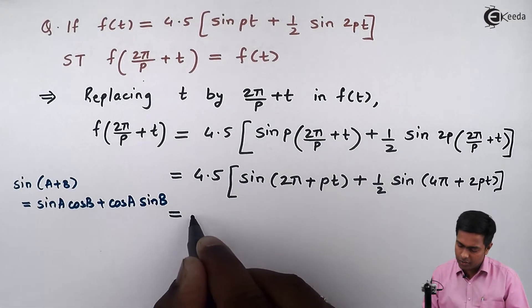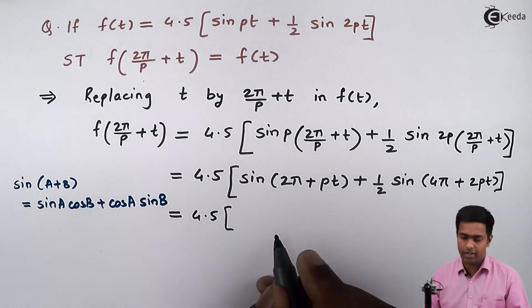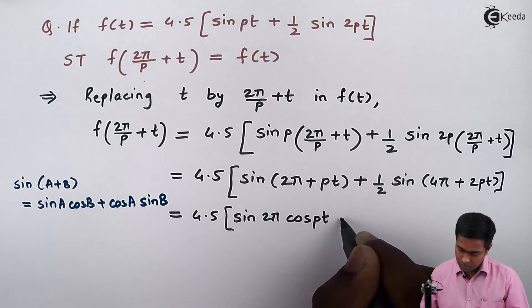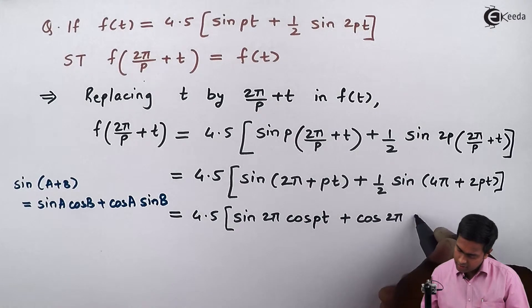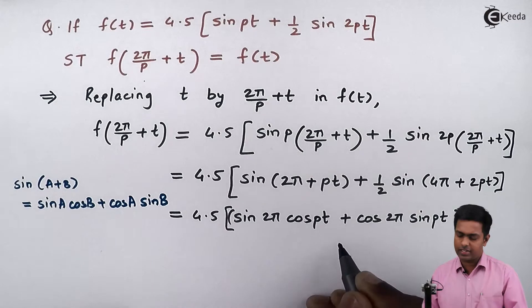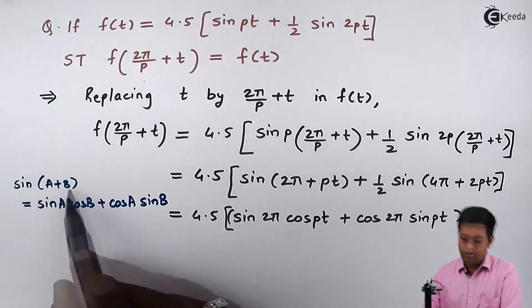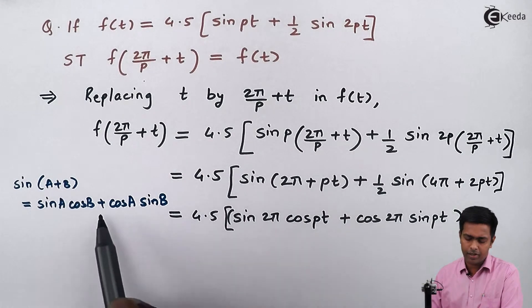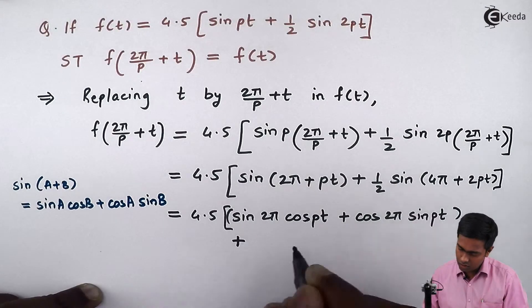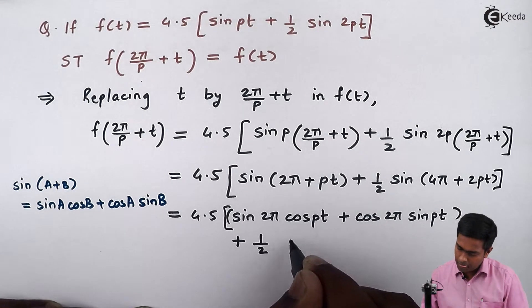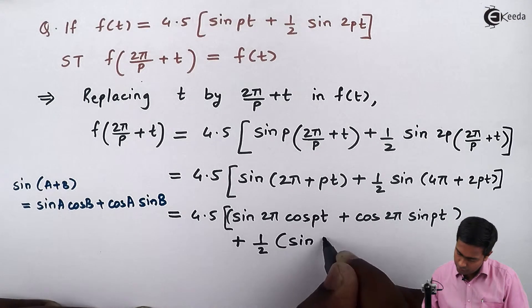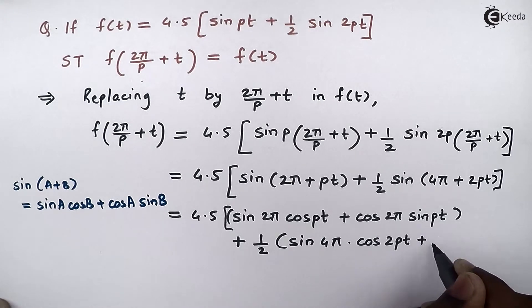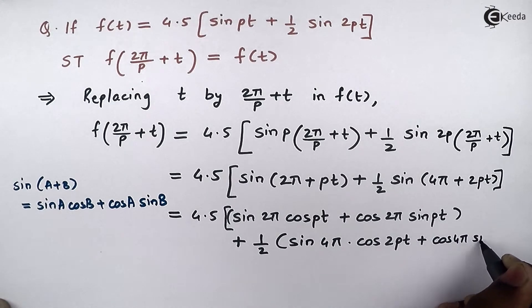Applying the sin(a+b) formula, for the first term with a = 2π and b = pt, we get 4.5 inside the bracket: sin(2π)cos(pt) plus cos(2π)sin(pt). Plus 1 by 2, the second term becomes sin(4π)cos(2pt) plus cos(4π)sin(2pt).